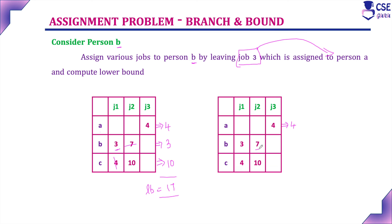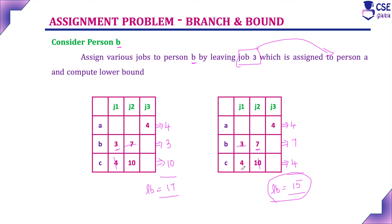Next, assigning the second job to person B has a cost of 7. The same row and same column are excluded. Job number 1 is the only job left for person C, with a cost of 4, giving a lower bound value of 15. Comparing: assigning job 1 to person B gives LB=17, and assigning job 2 to person B gives LB=15. The minimum is 15, so we assign job 2 to person B and job 1 to person C. With this, we have found the solution.